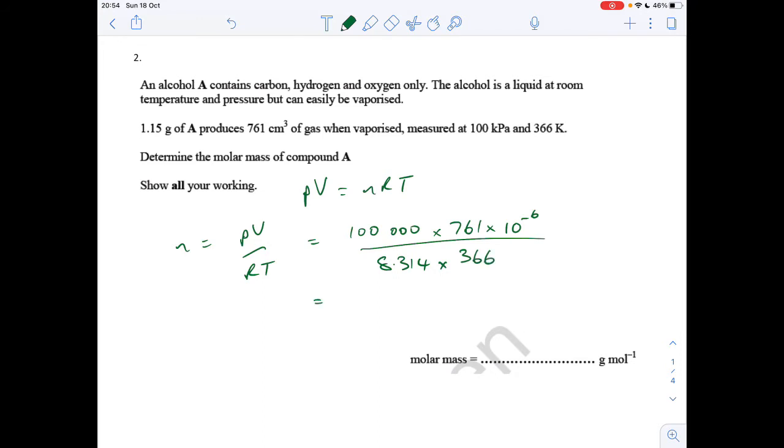That comes out at 0.0250 moles, so the MR is the mass, 1.15, divided by those moles, 0.025, and that comes out at 46.0.